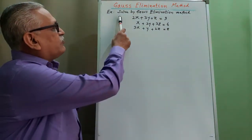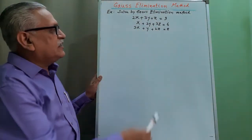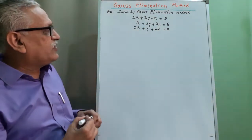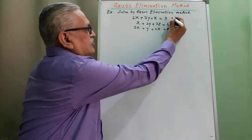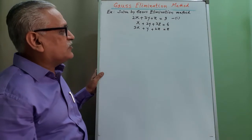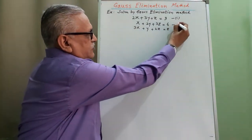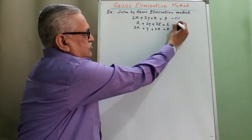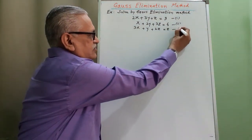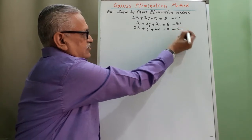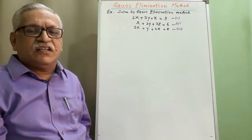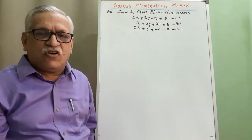Let us solve the example by the Gauss Elimination Method. The equations are: 2x plus 3y plus z equals 9, that is equation 1; x plus 2y plus 3z equals 6, equation 2; and 3x plus y plus 2z equals 8, equation 3. Here we have to obtain the solution of this linear simultaneous equation by the Gauss Elimination Method.